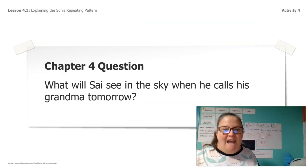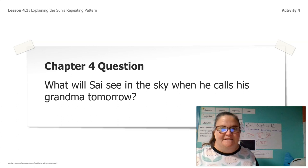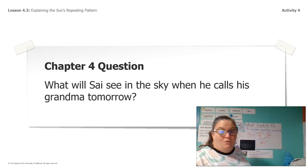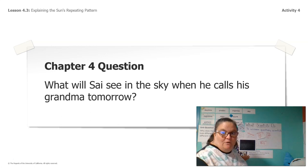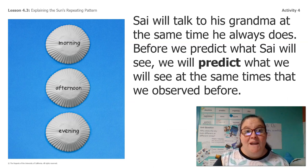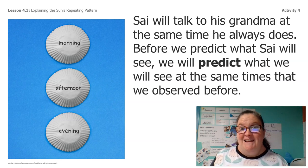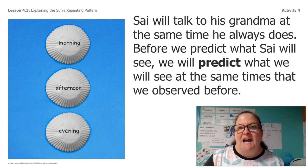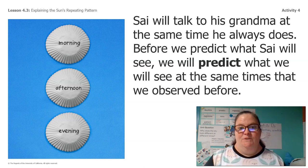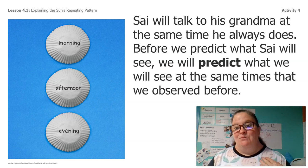Do we have enough information and evidence to answer our chapter four question: what will Sai see in the sky when he calls his grandma tomorrow? Let's practice communicating what we learned so that we can write our letter to Sai. Sai will talk to his grandma at the same time he always does. Before we predict what Sai will see, we will predict what we will see at the same times we observed before.